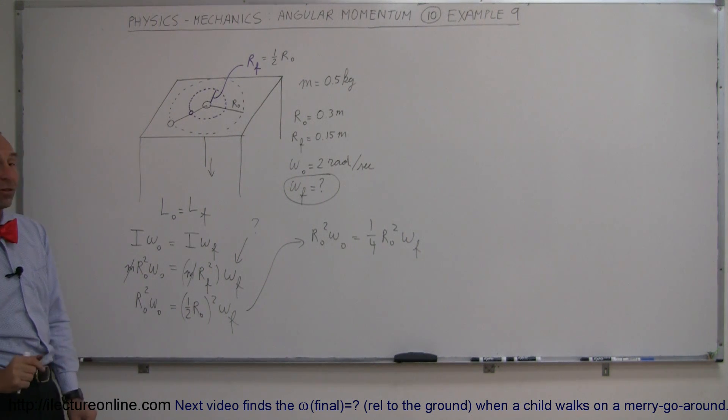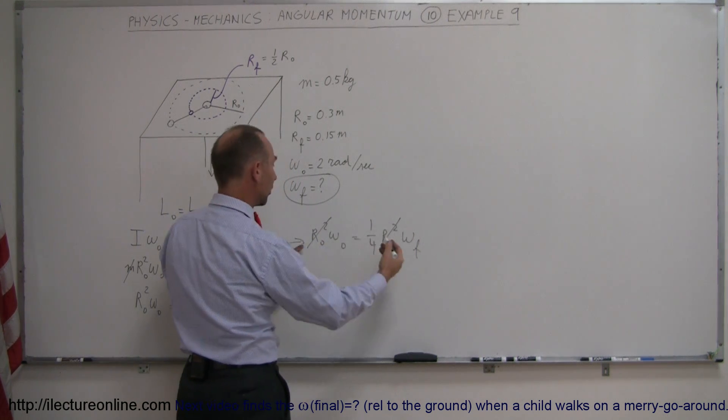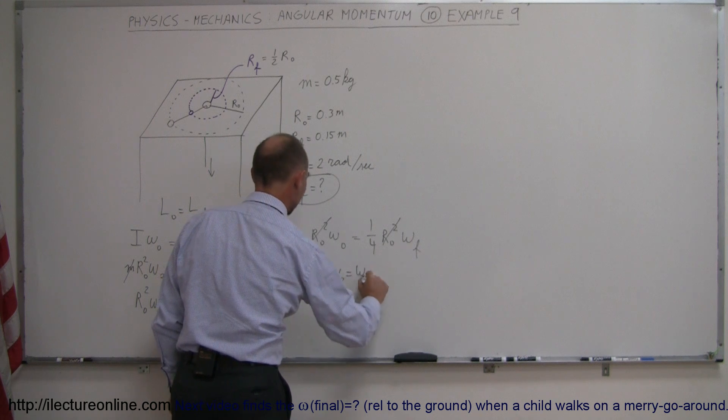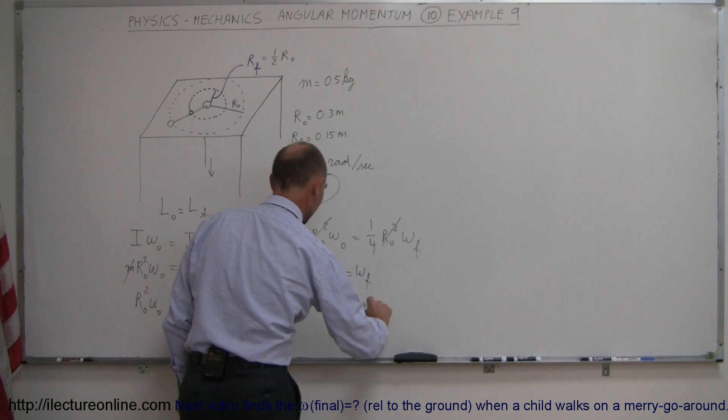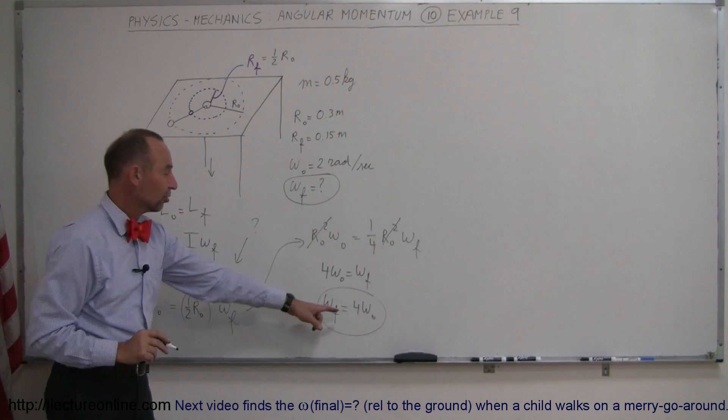Now notice that we have an r initial squared on both sides so we can cancel that out and multiply both sides by four. So omega final, the angular velocity final, is equal to four times the angular velocity initial.